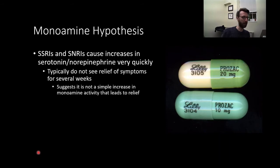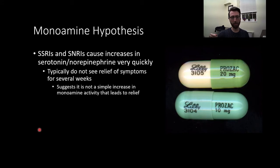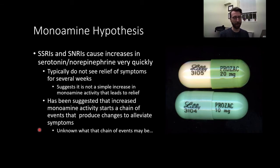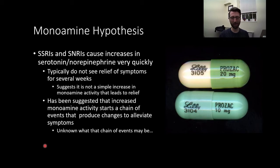But increasing neurotransmitter levels doesn't seem to be the whole story. SSRIs and SNRIs increase serotonin and/or norepinephrine activity very quickly — almost immediately — however, patients often don't see relief from symptoms for several weeks. This suggests it's not a simple increase in monoamine levels that leads to relief. One suggestion is that increased monoamine activity starts a chain of events that produces changes to alleviate symptoms, though exactly what that chain of events might be is not yet known.